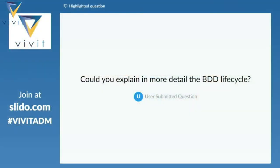Could you explain in more detail the BDD lifecycle? It starts with the user story or the feature — it depends on your implementation. You want to make sure that when you create the feature and user story, you create a behavior-driven development test that aligns to it. This will be your acceptance criteria for that feature. Do that in Octane, making sure that the three amigos — the developer, the business analyst, and the tester — know exactly what they should implement.